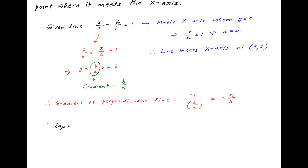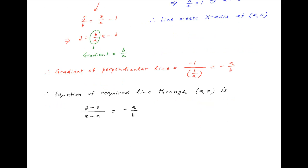Therefore the equation of the line passing through the point (a, 0) which is perpendicular to the given line is: y minus 0 divided by x minus a is equal to minus a upon b. Cross multiplying, we get b·y is equal to minus a times (x minus a), which implies that b·y is equal to minus a·x plus a squared. Therefore the equation of the required line is ax plus by is equal to a squared, which is the required answer.